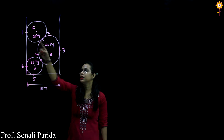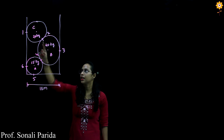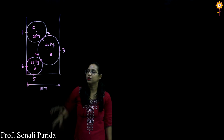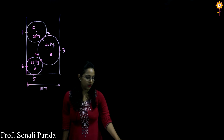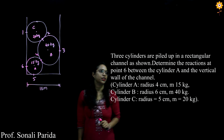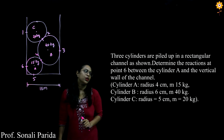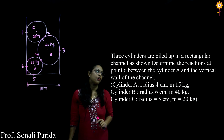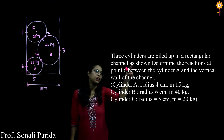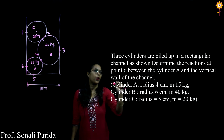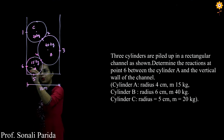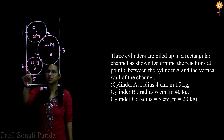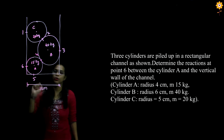These three cylinders are arranged in a rectangular box which is in equilibrium. According to the question, we have to find the reaction at point 6.